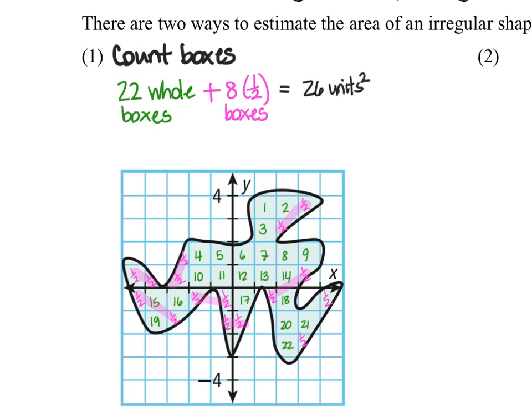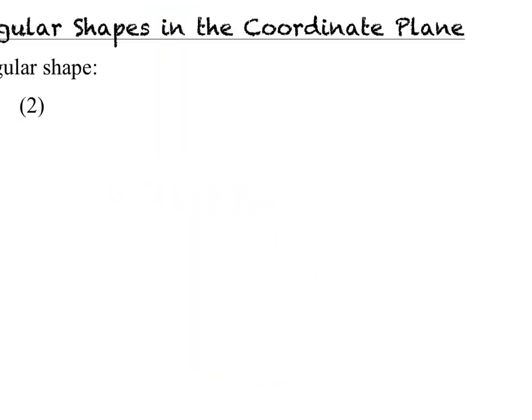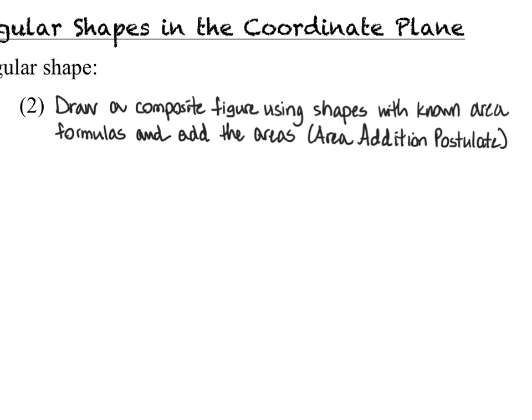All right, that's one method of doing this. Now, the other method of doing this is for us to draw a composite figure made with a bunch of different shapes that we know the area formula for, and then add up all of the areas of the different shapes that make up our composite figure. So that means we're going to need to go back to our figure and draw some shapes on top of it.